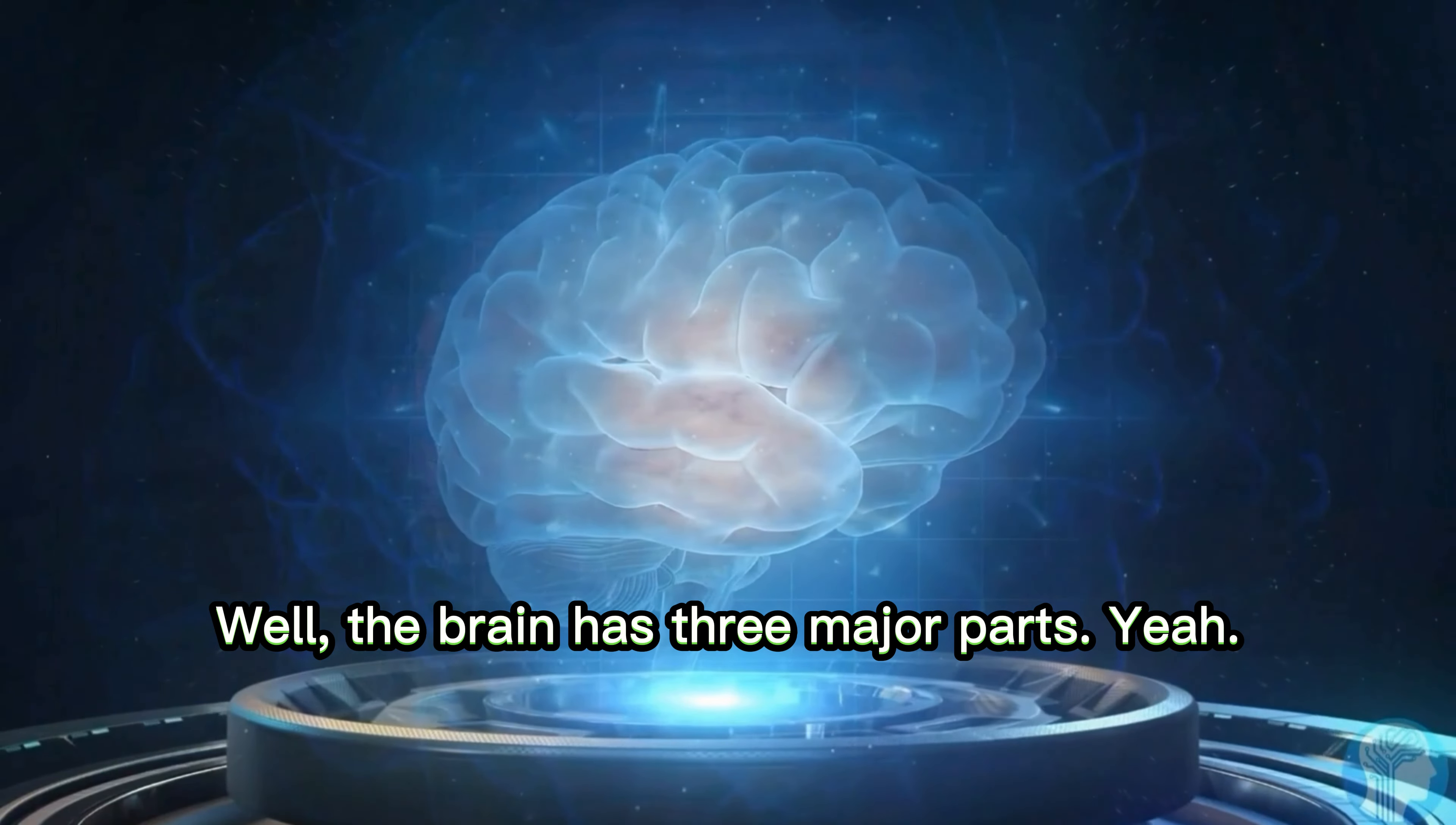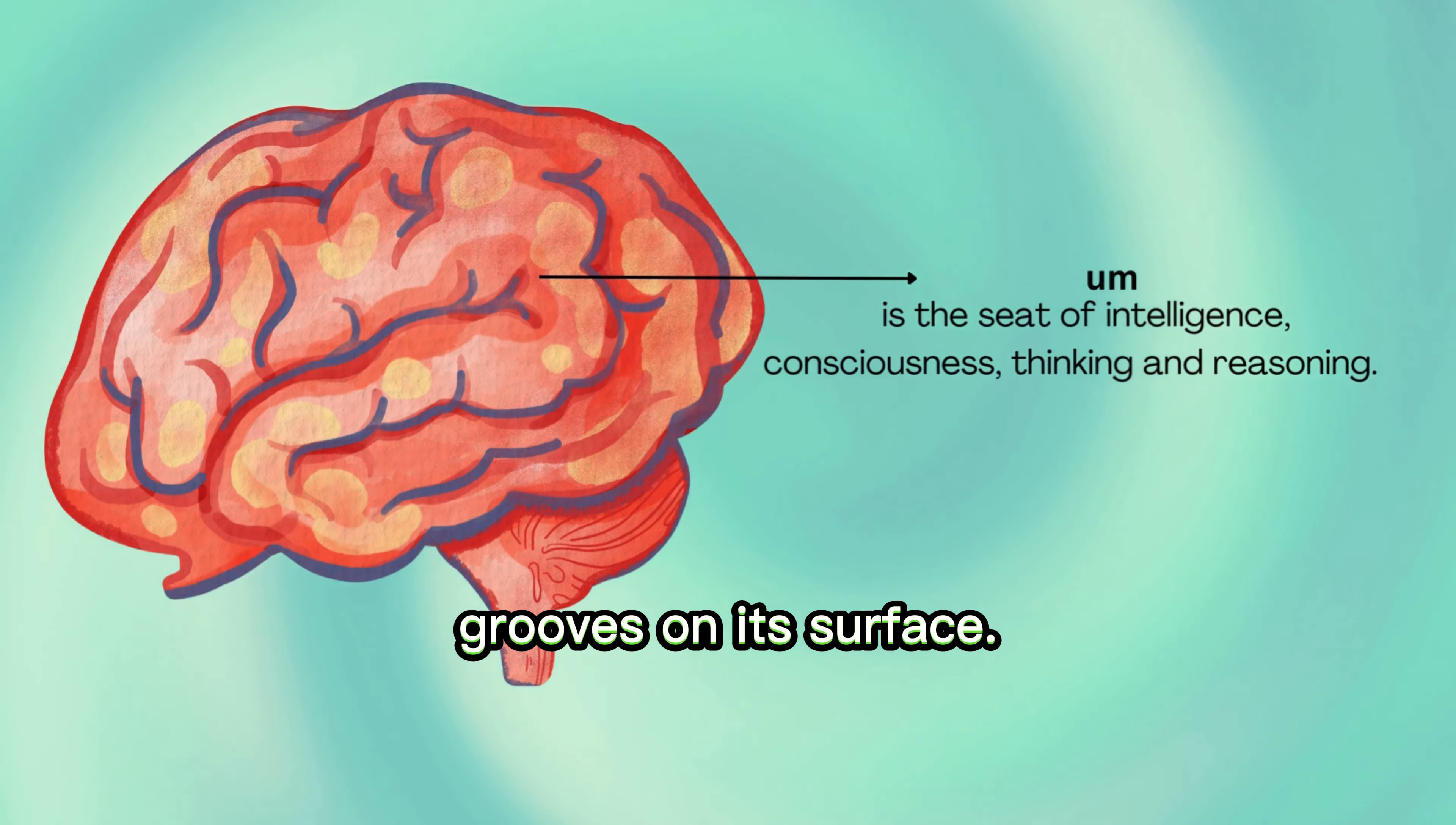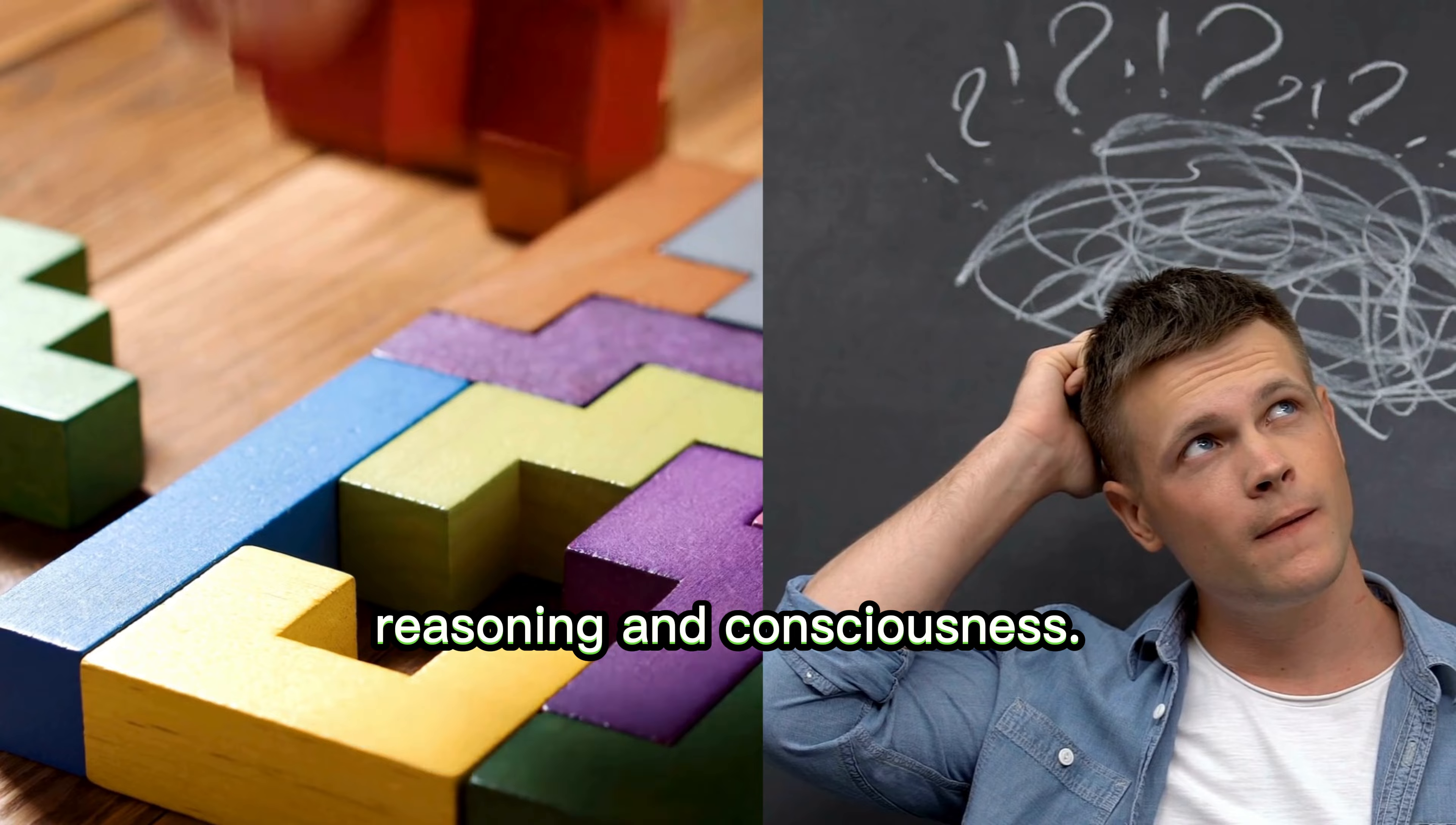The brain has three major parts. The first one is the cerebrum. It is the largest part of the brain, it has many folds, creases, and grooves on its surface, and it is responsible for your intelligence, thinking, reasoning, and consciousness.